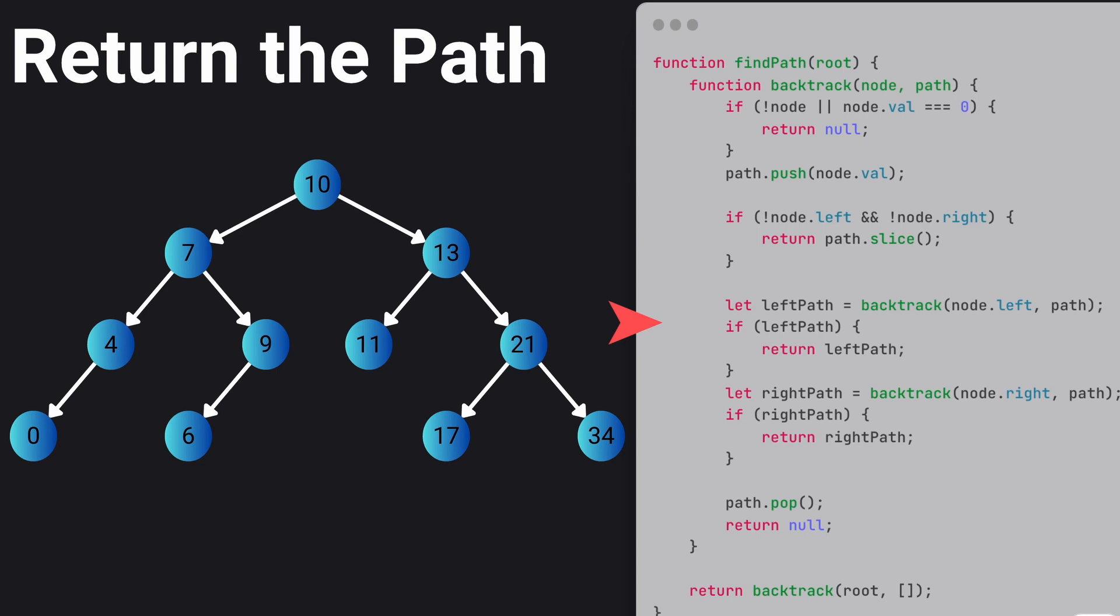Otherwise we recursively check the left side of the tree and return that path. If there is no path found in the left side, we check the right side of the tree and we return the path from the right side. If we didn't find any paths from the left and right side of the tree, we pop the last node and start exploring the left side of the upper tree. If we didn't find any path in our entire tree, we return null from the backtrack function.